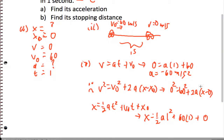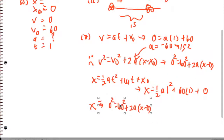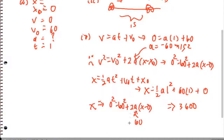Now I can use that acceleration to solve for displacement by plugging into the equation. I end up getting 3,600 divided by negative 120, which gives me a displacement of 30 meters for this first problem.